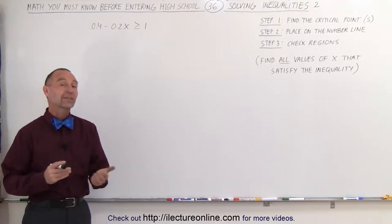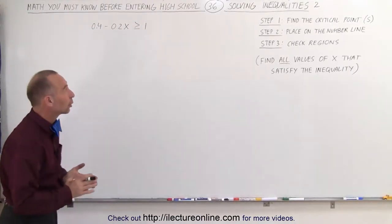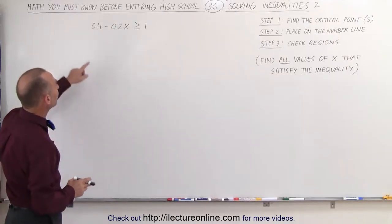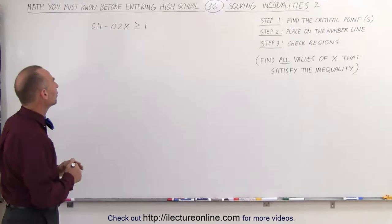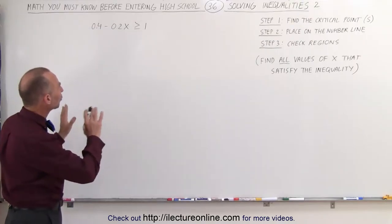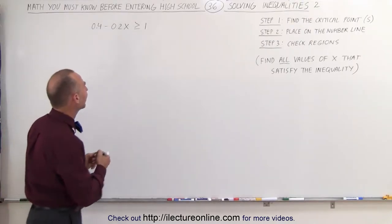Welcome to our lecture online. Here's our next example of how to solve linear inequalities. Notice that this one has decimal points, so it's better to get rid of those decimal points, and we're going to multiply both sides of the inequality sign by 10.